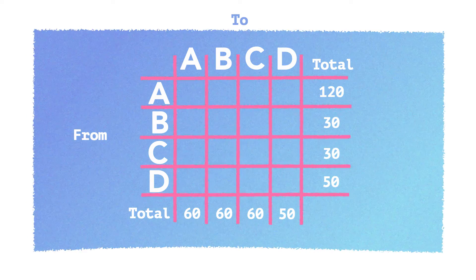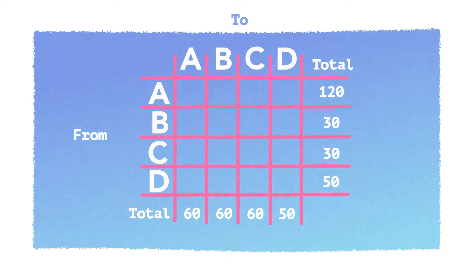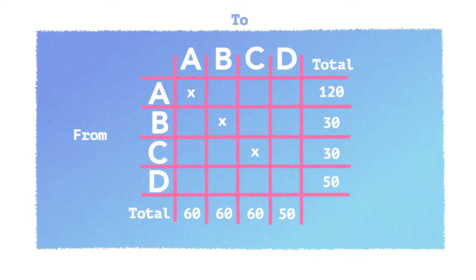Then we also know that nobody goes back to where they start. So we can cross all of those out. A to A, B to B, C to C and D to D.